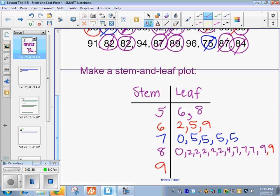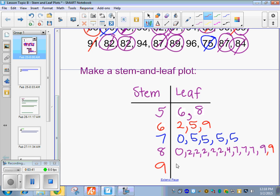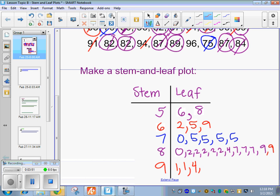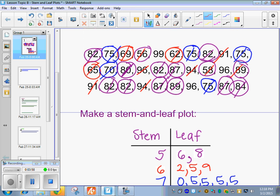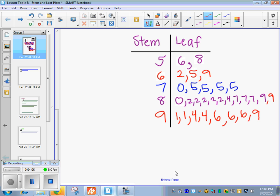All right. Now we've got the 90s. What goes first? 91. And there's two of those. What goes next? 94. Two 94s. I think there were three, right? One, two, three. And a 99.